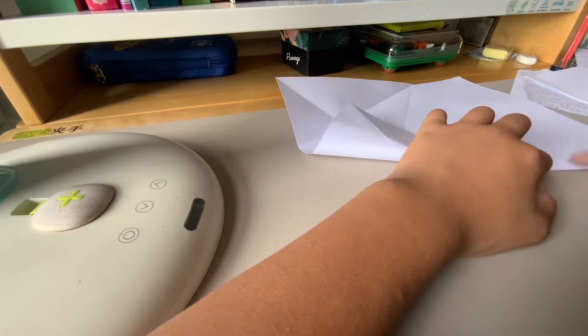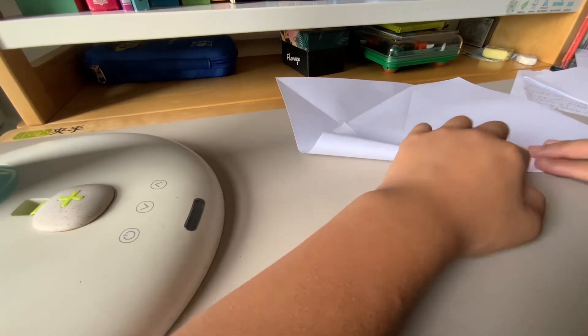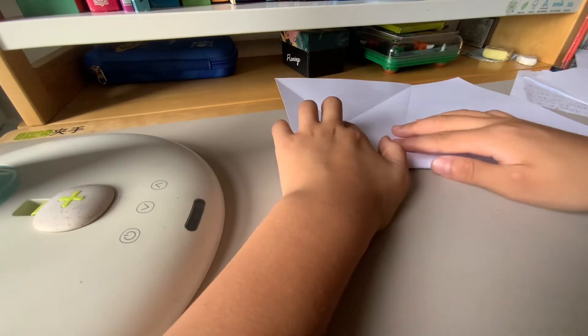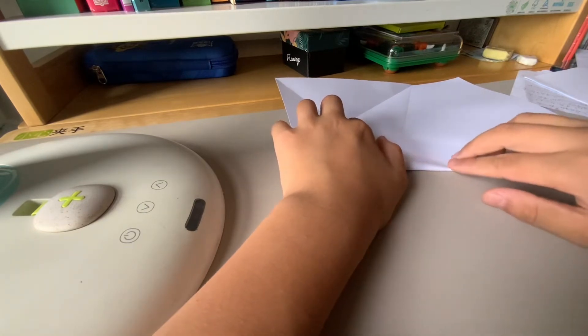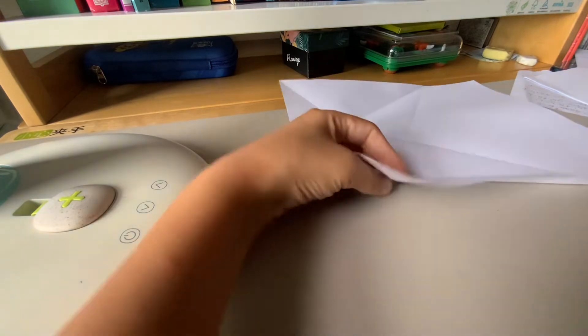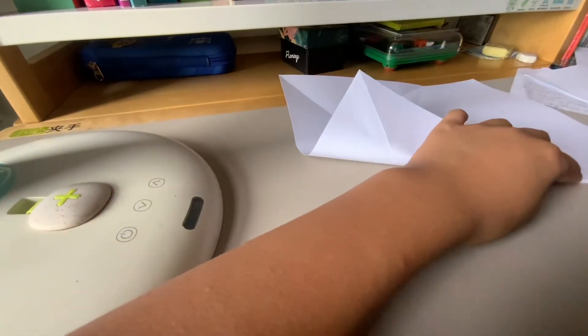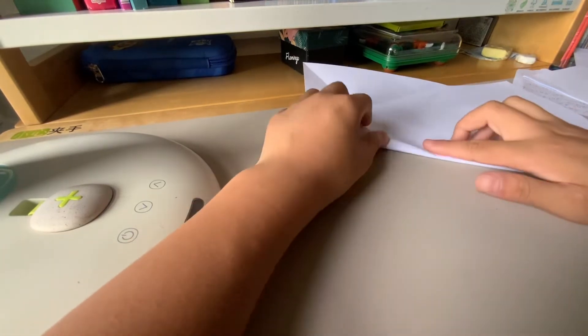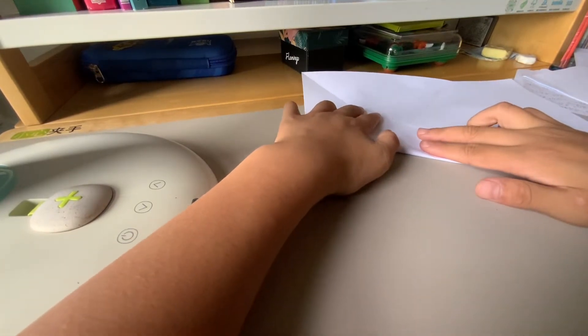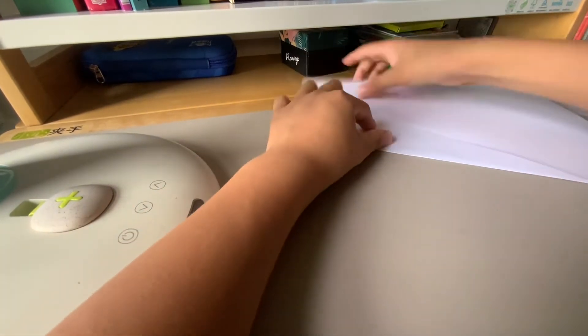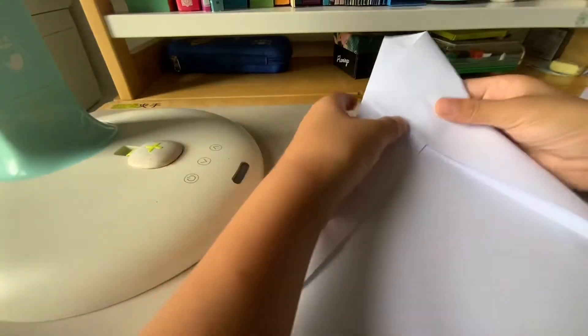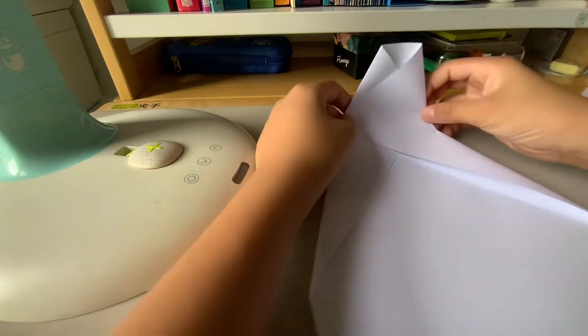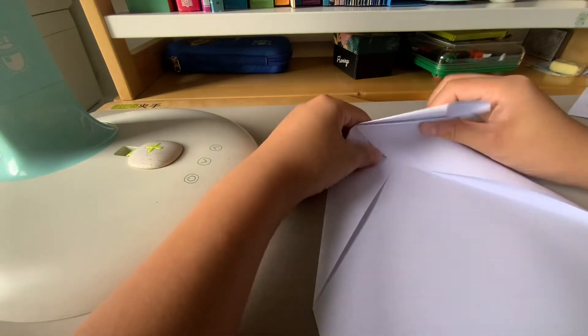Repeat this again on the other side. Make sure it folds the line accurately, then you basically fold it together like this. You should see a line in the middle and then you fold the line.